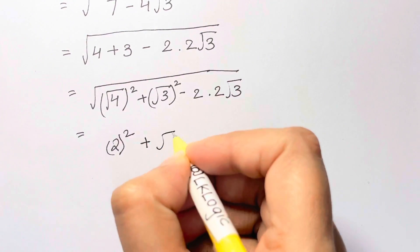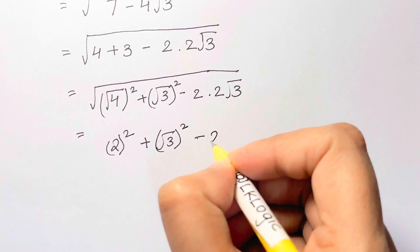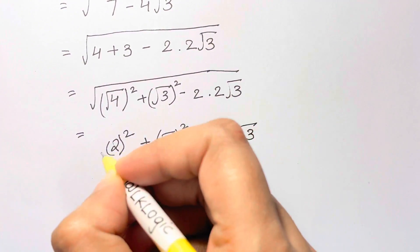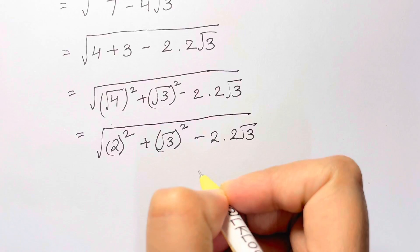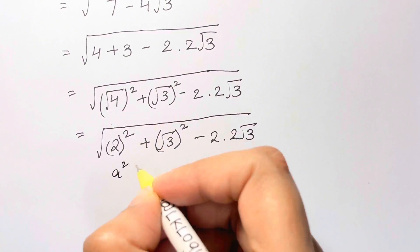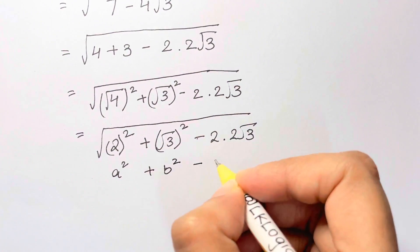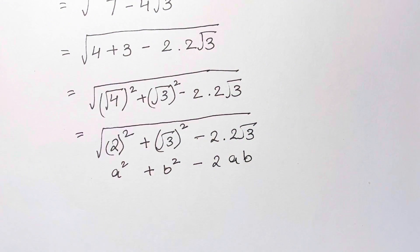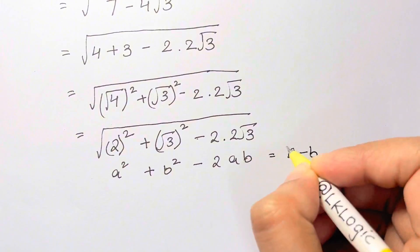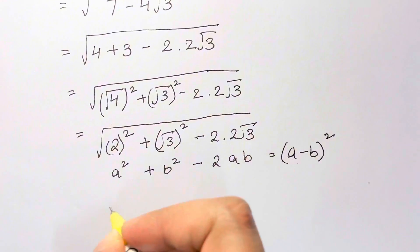So 2 whole square plus root 3 the whole square minus 2 times 2 root 3 under the root. Now this is the form of an identity which is a square plus b square minus 2ab. a is 2 and b is root 3, which is a minus b the whole square.